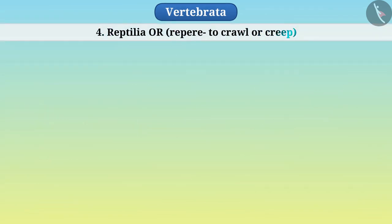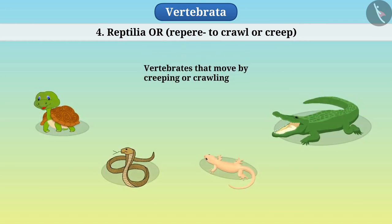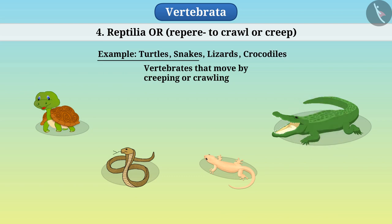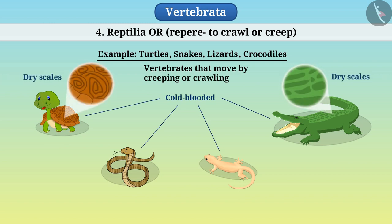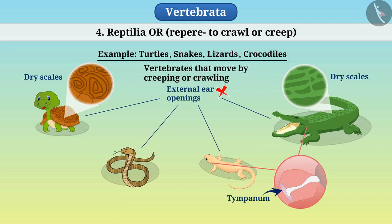Class Reptilia contains all those vertebrates that move by creeping or crawling, such as turtles, snakes, lizards, crocodiles, etc. They are all cold-blooded animals. Their body is covered with dry scales. They do not have external ear openings, but the tympanum represents the ear.